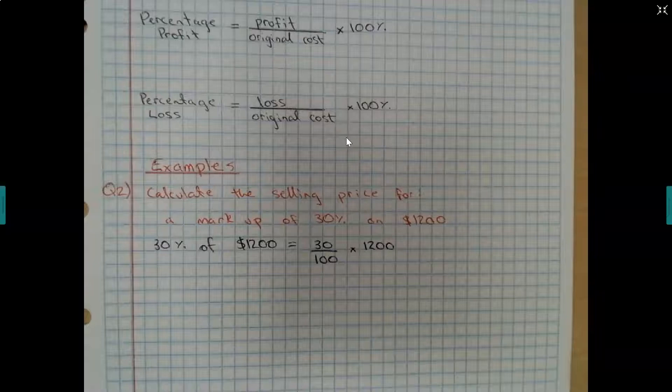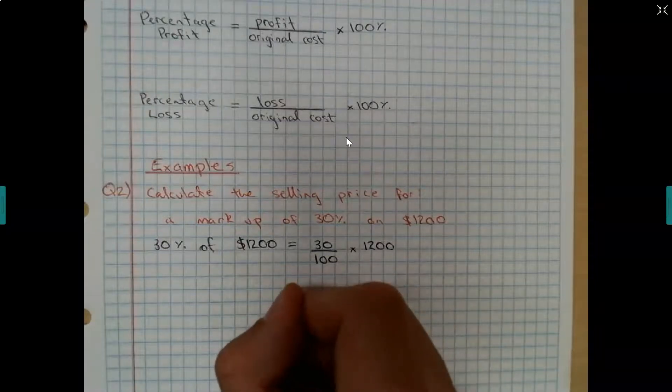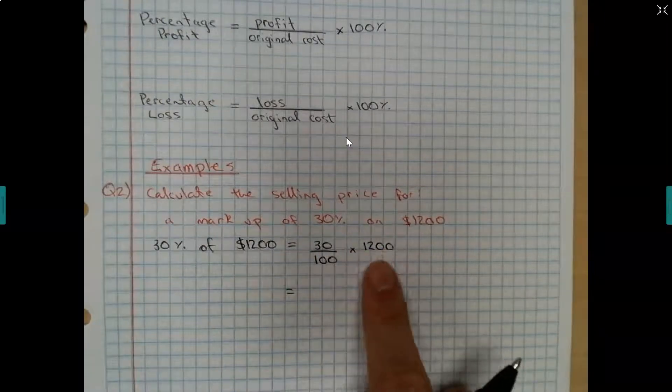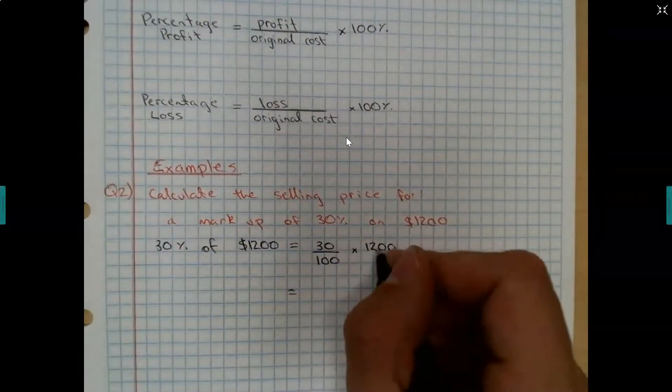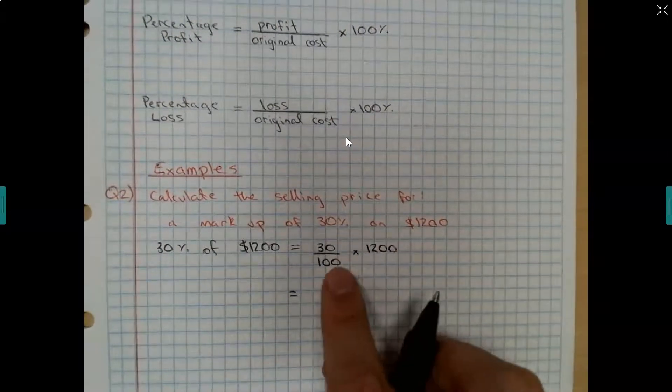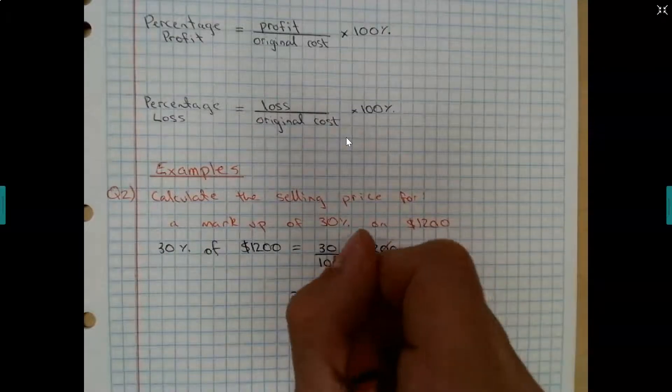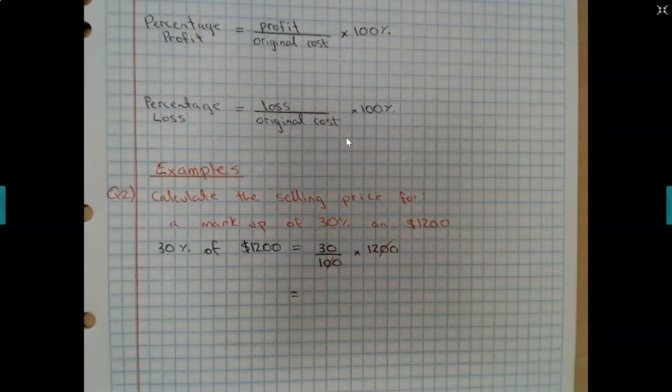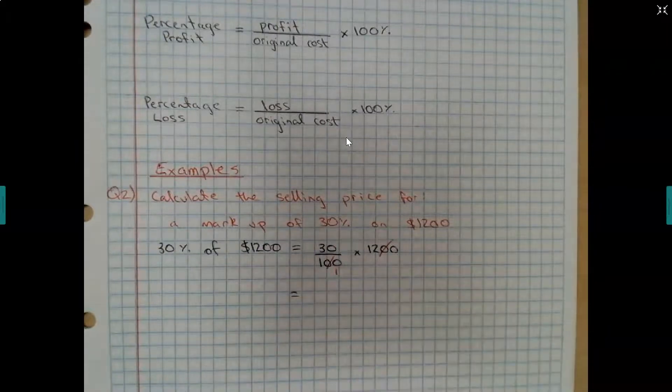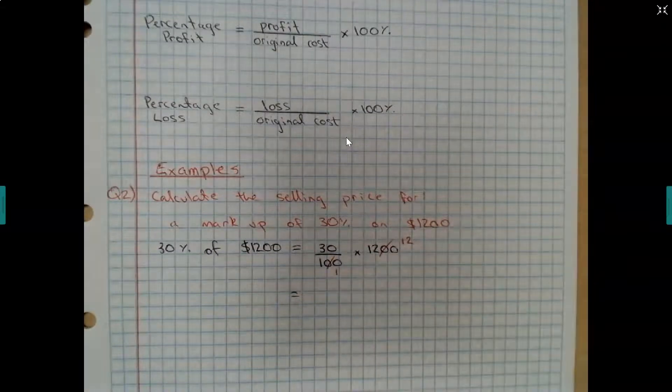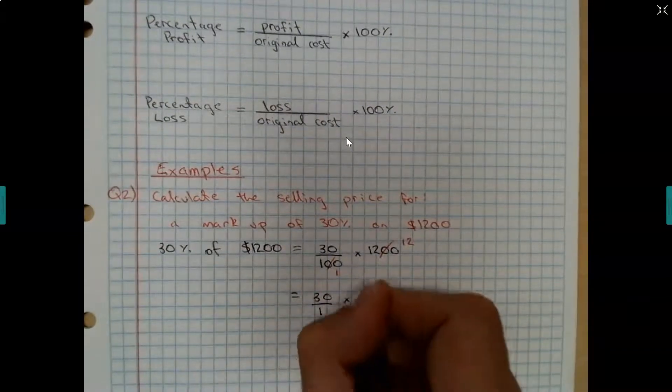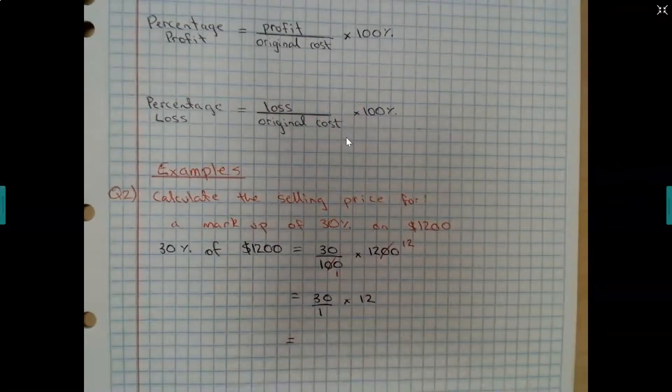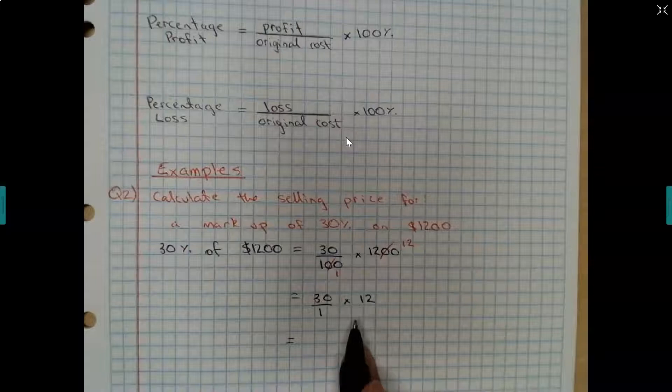Of $1,200. Now, since this is an easy one, we won't use a calculator. Just imagine this was $1,200 over 1. If I do a cross cancellation, what could I divide each of those by? What could I divide $1,200 by and also $100 by? $100. So if I divide $100 by $100, I get 1. And if I divide $1,200 by $100, I get 12. So then I've got 30 over 1 times 12. And then 3 times 12 is 36. Add the 0, $360.